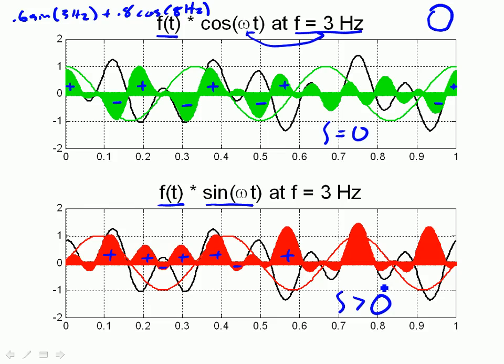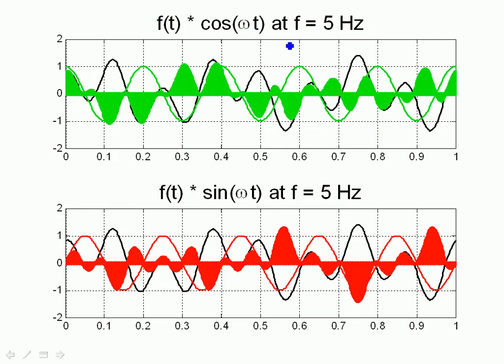Let's look at something at a different frequency, at 5 hertz, that the function doesn't have in it. If we look at a 5 hertz overlap between our function, we get negative, negative, positive, positive. I don't have to go through this. You can see that the integral of this is going to sum to 0. The sine term looks like it's equally balanced on positive and negative. And the integral of the sine term is also going to be 0 at 5 hertz, because there is no 5 hertz component in our function.